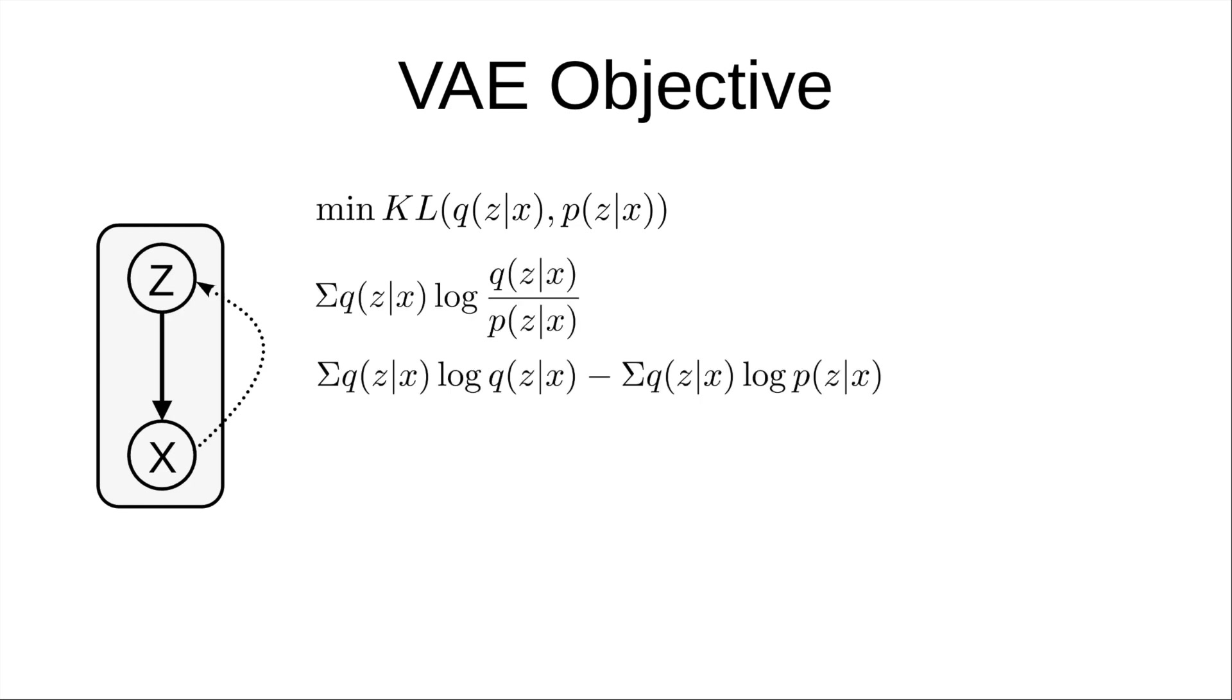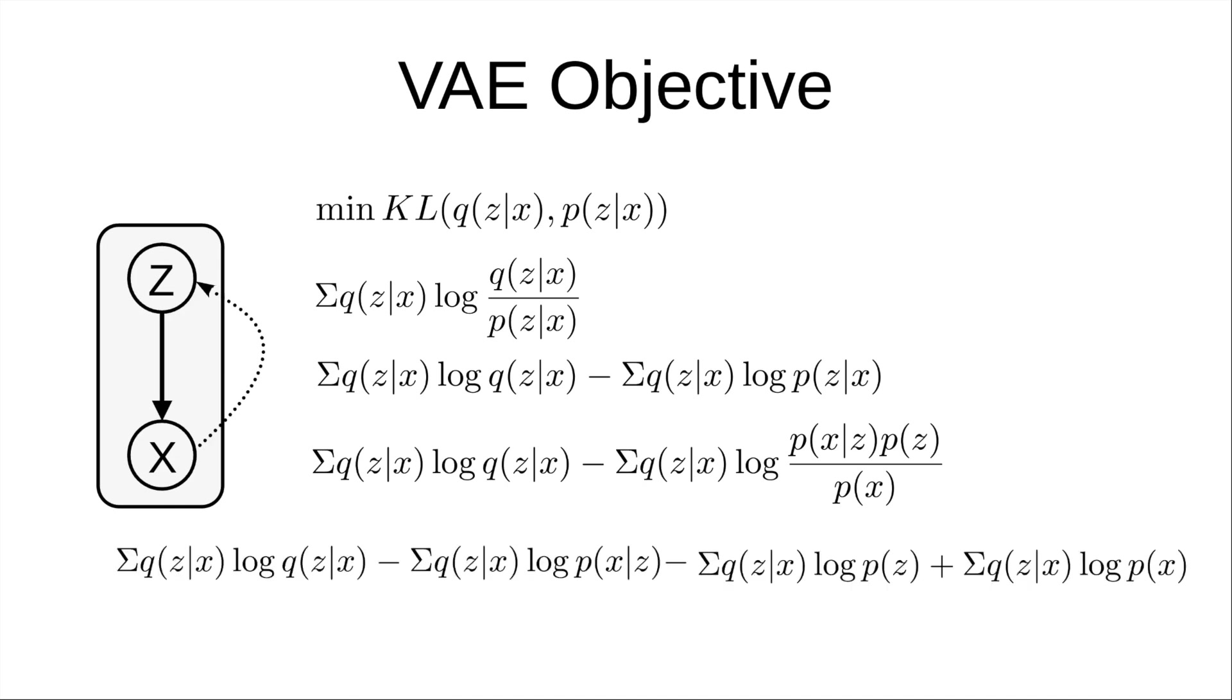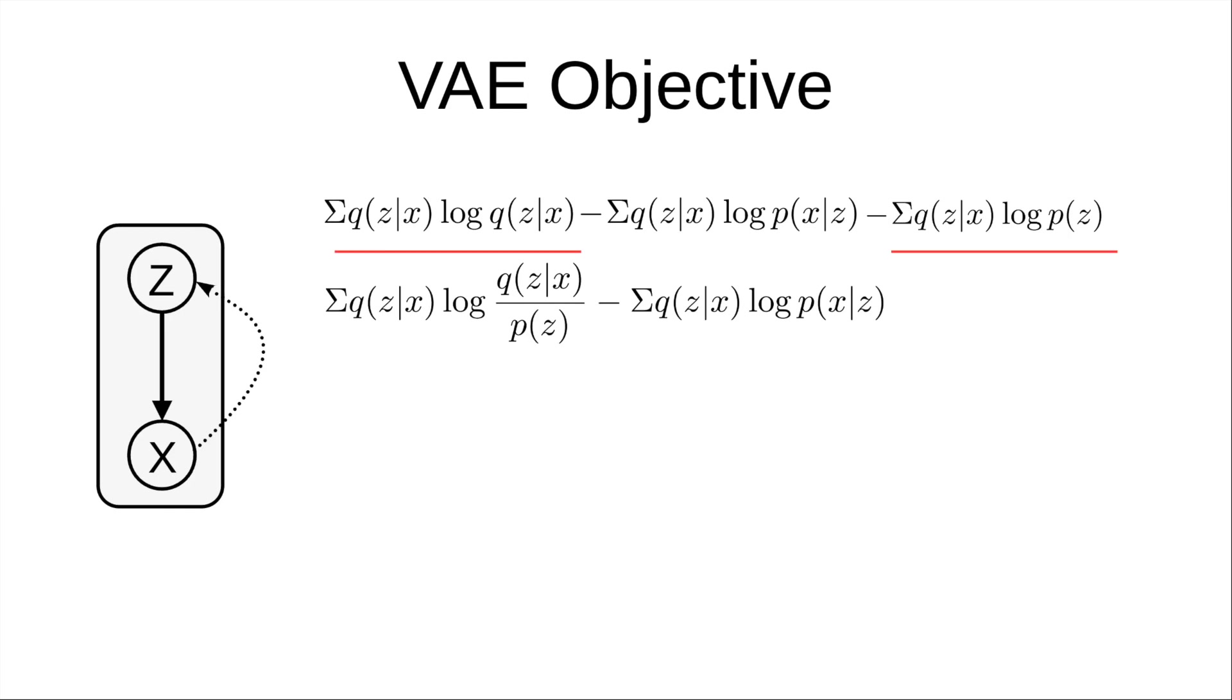We have used summations here, but given the distributions are continuous, it would be integral. So we can just replace summations with that everywhere. Applying Bayes theorem on p(z|x) gives us this. We then expand all the terms in the numerator and denominator. The last term is nothing but a constant and can be ignored as far as optimizing q(z|x) is concerned. We then bring the q(z) and p(z) terms together and rewrite the first term as KL divergence and the second term as expectation of log p(x|z).